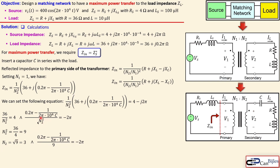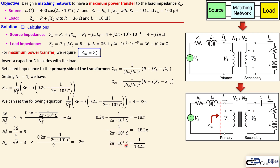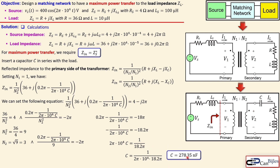Substituting N2² = 9 into the imaginary equation, multiplying both sides by 9 and rearranging gives 2π × 10⁴ × C = 1/(18.2π). Solving for C: C = 1 / (2π × 10⁴ × 18.2π) ≈ 278.35 nanofarads. We have now determined both the transformer ratio and the series capacitor value.